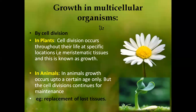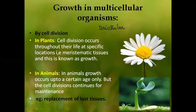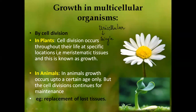Unicellular — uni means single. So what will be the definition? The animals which have only one cell — very good to everyone who is answering. Uni means single. The organism which has only one cell is known as unicellular.